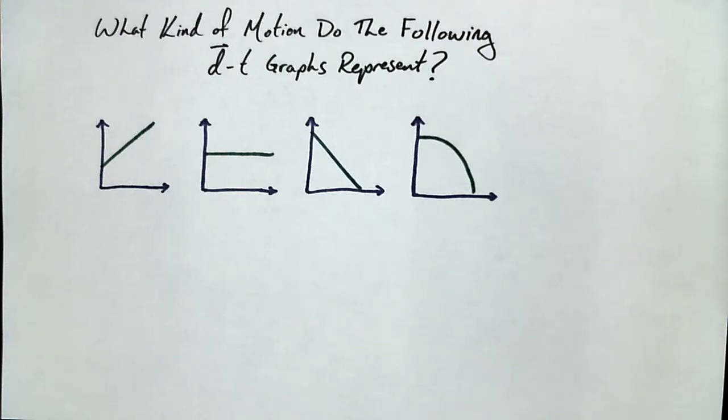This is by way of review, really. What kind of motion do the following DT graphs represent? Let's take a look at the first one.